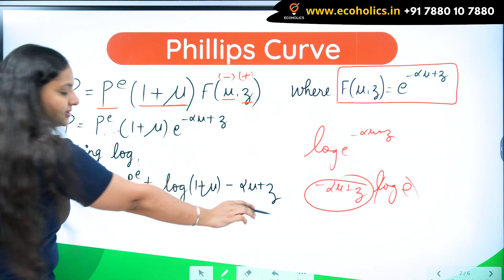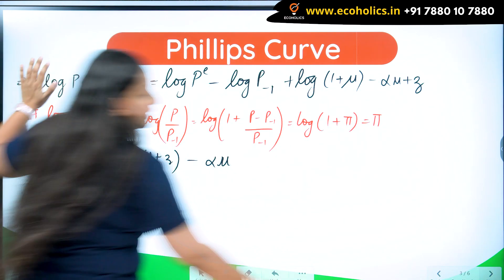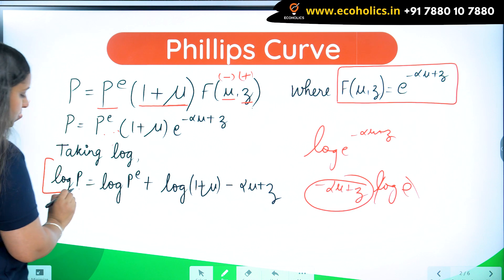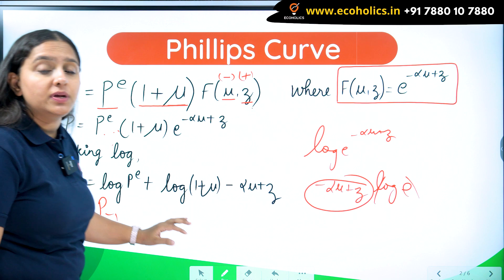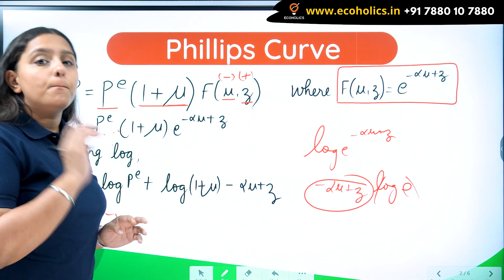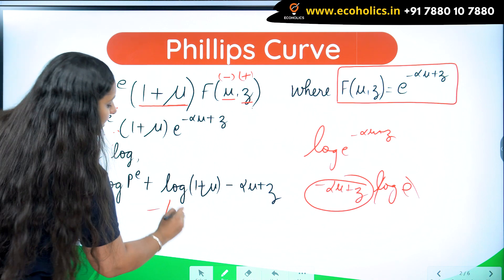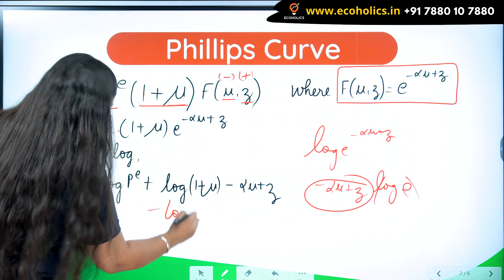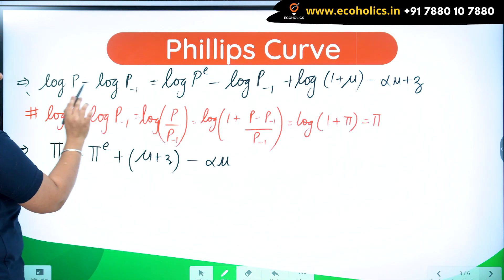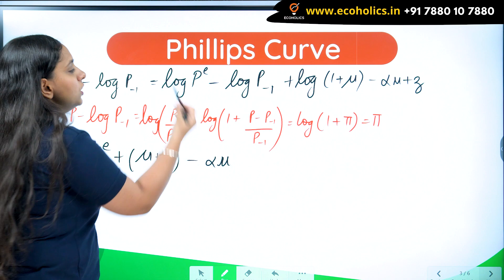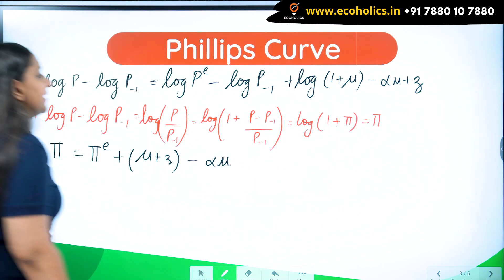Let's get to the next page. I am going to take this equation from here to here. What I have done is in the equation on the previous page, I am going to subtract log P minus 1, logarithm of prices of last year. From here I will subtract and from the right hand side also I am going to subtract. After doing that, this is my equation.